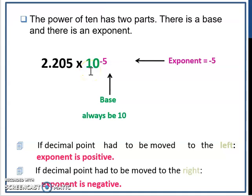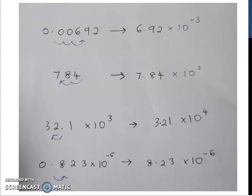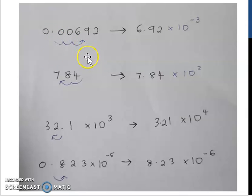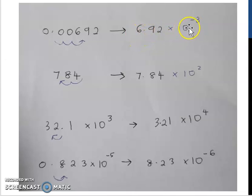The base always be 10 and the exponent can be negative. There is a rule: if the decimal point had to be moved to the left, the exponent is positive. If the decimal point had to be moved to the right, the exponent is negative. Contohnya, you have 0.00962 — you want to turn it into scientific notation. You move it to the right 3 times, so the exponent is negative 3, and you get 6.92 × 10⁻³.